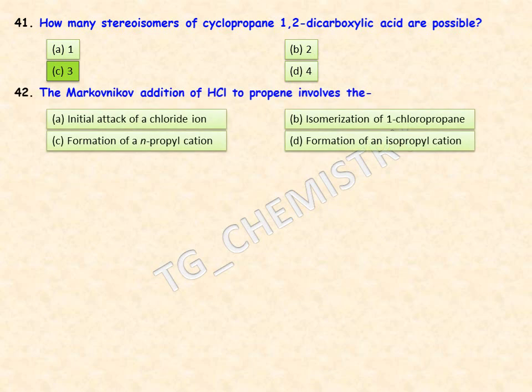Markovnikov addition of HCl to propene involves which step? Options are initial attack of a chloride ion, isomerization of 1-chloropropane, formation of an n-propyl cation, or formation of an isopropyl cation. Option D is the right answer: it involves the formation of an isopropyl cation, after which the reaction proceeds.